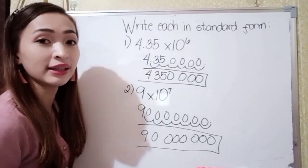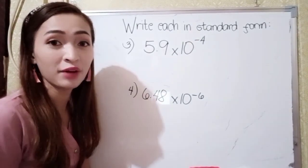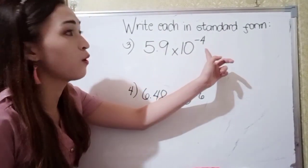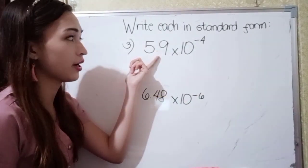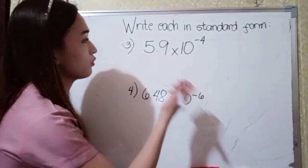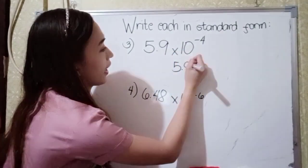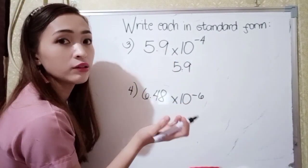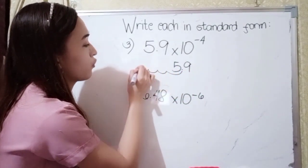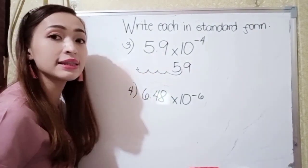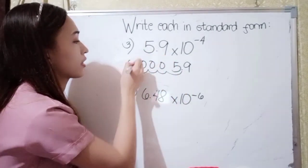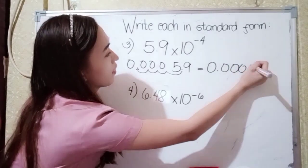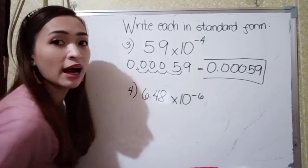For number 3, we have 5.9 × 10⁻⁴. If the exponent is negative 4, we move the decimal point 4 counts to the left. Starting from 5.9, counting: 1, 2, 3, 4. Here would be our decimal point, and we add zeros. Our final answer in number 3 is 0.00059.